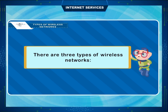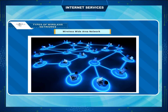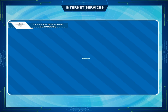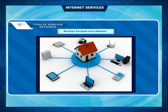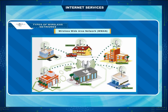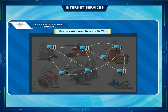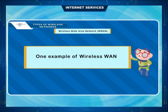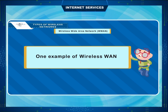There are three types of wireless networks: Wireless Wide Area Network (WWAN), Wireless Local Area Network (WLAN), and Wireless Personal Area Network (WPAN). In wide area networks, the computers are far apart and are connected by radio waves. One example of a wireless WAN is networks provided by cell phone carriers.